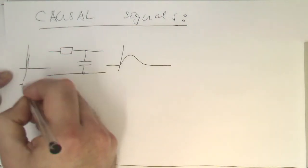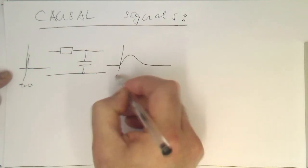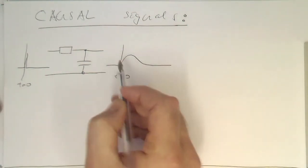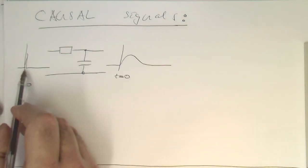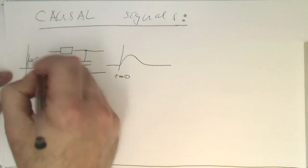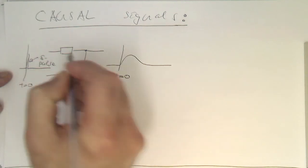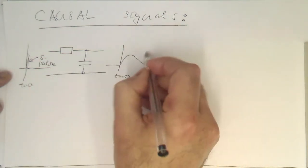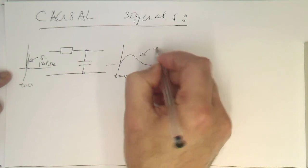Here this is t equals zero and this is t equals zero here. So we are basically giving this system a small push with this delta pulse here. And then the system reacts to this here. That's the reaction of the system.